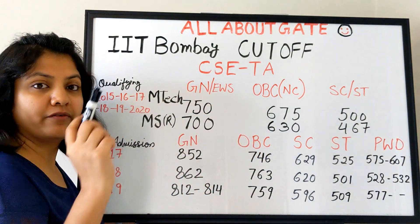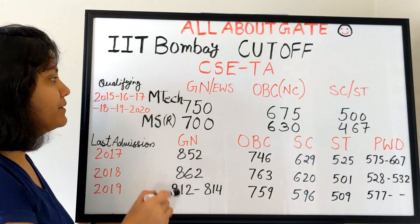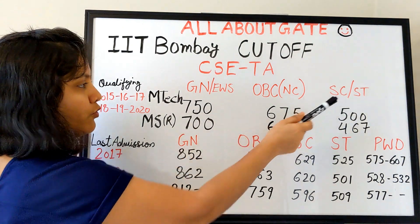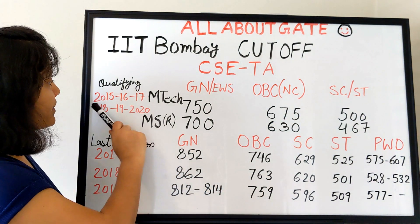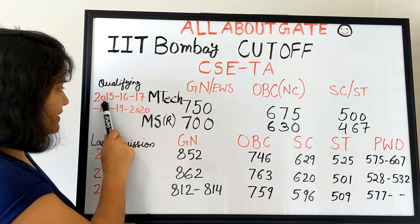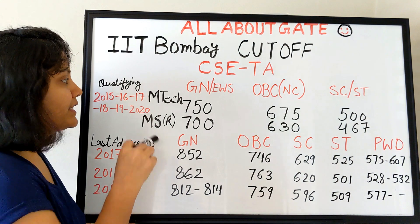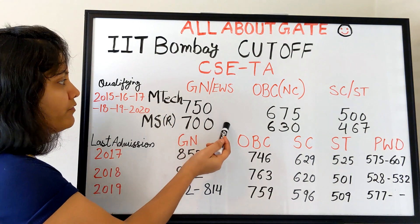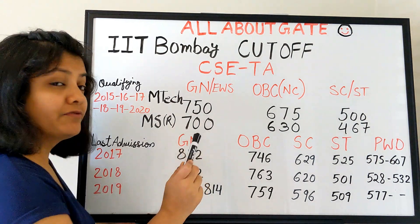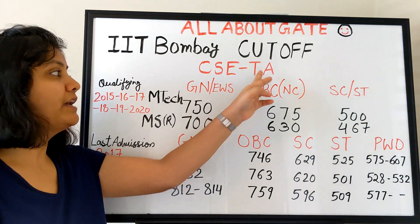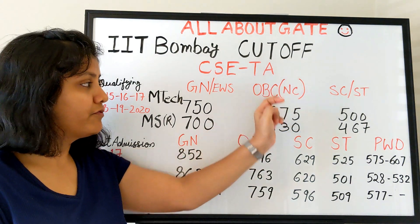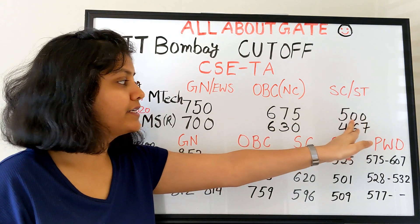What I am discussing is for the TA category. For the qualifying cutoff for M.Tech CS from 2015 through 2020, IIT Bombay has maintained the same cutoff. For General and EWS category, the cutoff is 750 — you must have a GATE score of 750 to apply. For OBC non-creamy layer, it is 675. For SC/ST, it is 500.